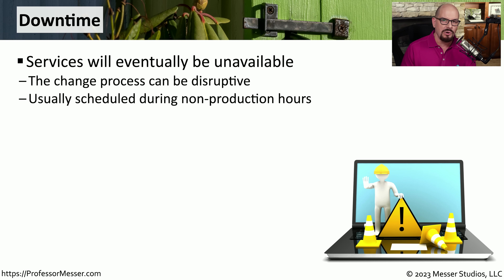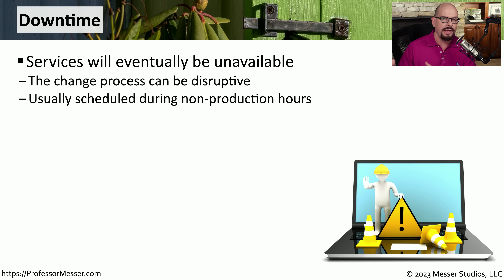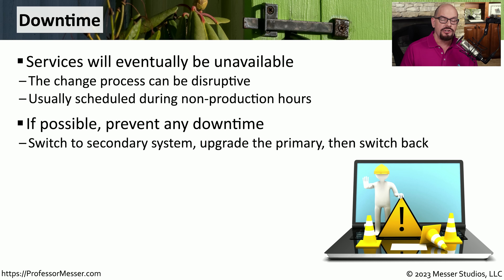When most people hear the term change control, they automatically think about downtime. Although this doesn't necessarily mean there will be downtime, we very often set aside a window to inform people there might be some unavailability. This is one reason IT professionals tend to make these changes during non-production hours — overnight or times when people are not working on a particular application. If you work for an organization that is up and running 24 by 7, finding a change control window where downtime is tolerated can be very difficult. In those environments, it's more common to have a system where you can switch to a secondary system, update the primary system, and then switch back seamlessly to prevent any downtime.